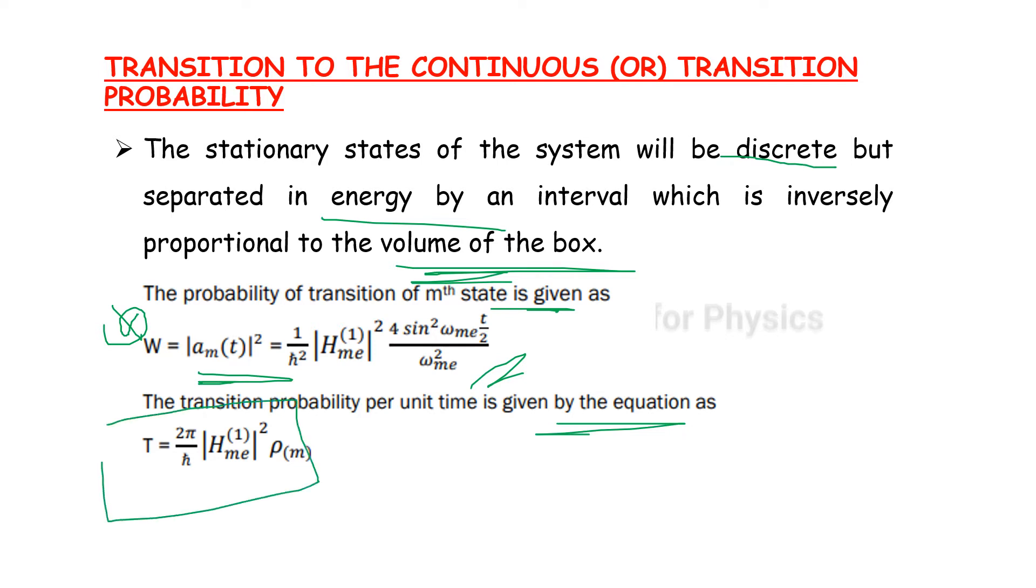So this is very very important. The formula, this formula has wide application. The formula is equal to 2π divided by ℏ, the modulus |H₁^ME| modulus square ρ_M. This is the Fermi-Golden rule and states that the transition probability per unit time is performed. This is non-zero only between states of the same energy.